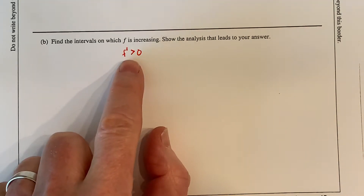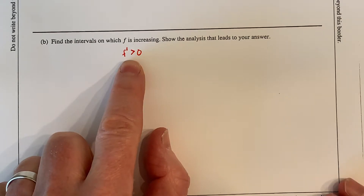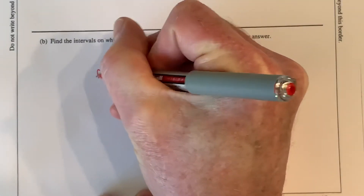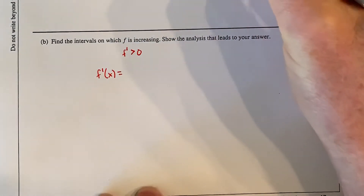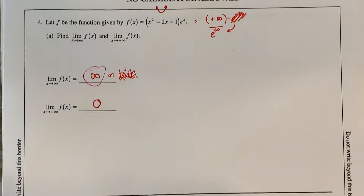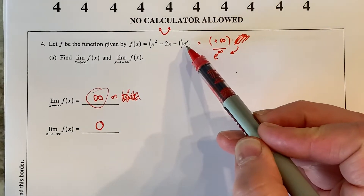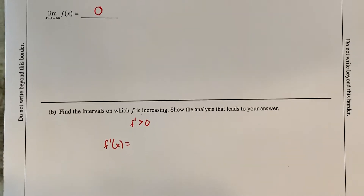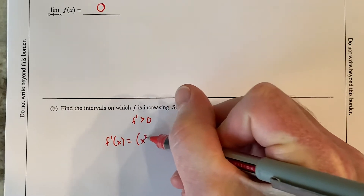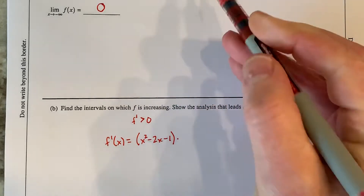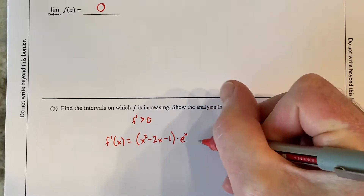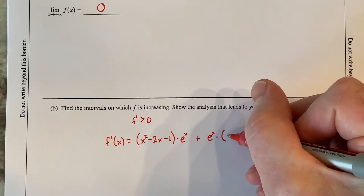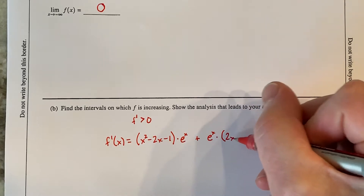To find the derivative of F, I need to do a product rule. Looking back at the original function — the derivative of F is a product of the parabola and that exponential. So: first D second plus second D first. First is x squared minus 2x minus 1, the derivative of the second e to the x is just e to the x, plus second e to the x times the derivative of the first, which is 2x minus 2.